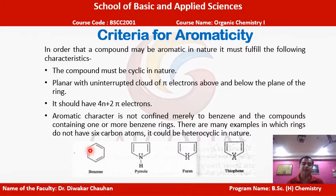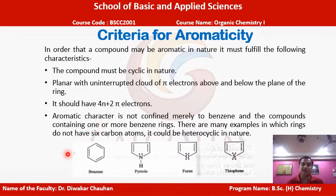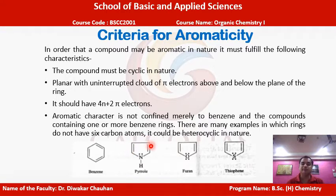In benzene, three pi bonds give six pi electrons. In pyrrole, two double bonds give four pi electrons, and the two lone pair electrons from nitrogen also contribute to delocalization, giving six total — satisfying 4n+2. Similarly furan and thiophene also follow this rule. Aromatic character is therefore not limited to benzene-type structures but also extends to five-membered rings containing heteroatoms like nitrogen, oxygen, and sulfur.